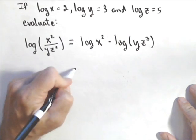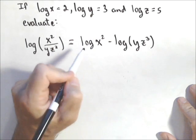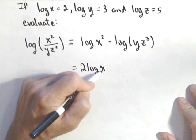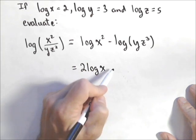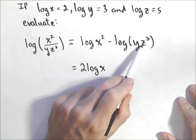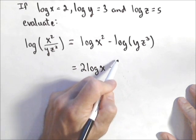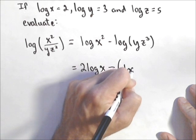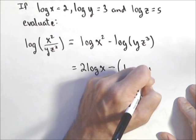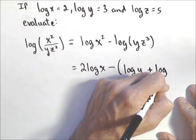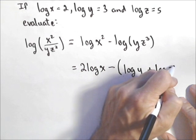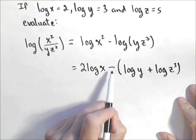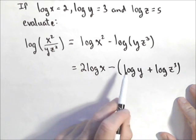Now here, log of x², we have a property that allows us to pull the two out front, and we get two log of x. Now here, I still need to split these. Now I have a product, so I have minus, and I will want to put these in parentheses: log of y plus log of z³. Those do need to be in parentheses because we are subtracting off that whole quantity.